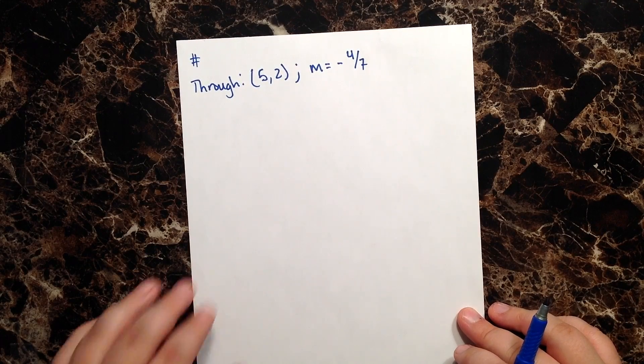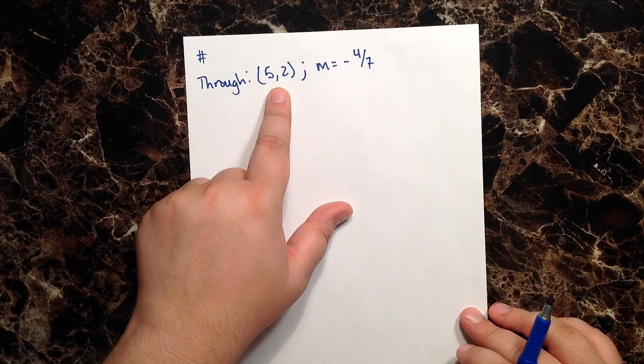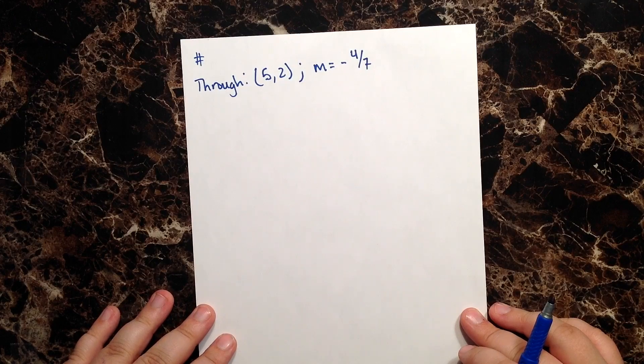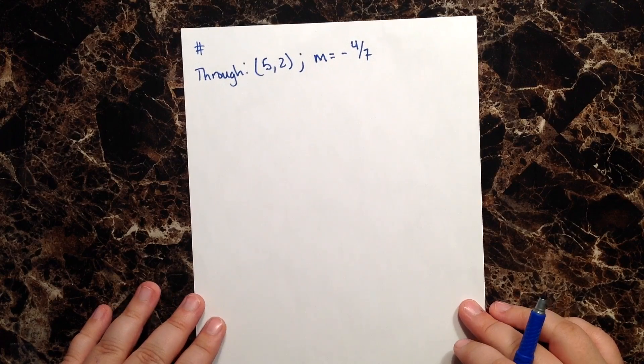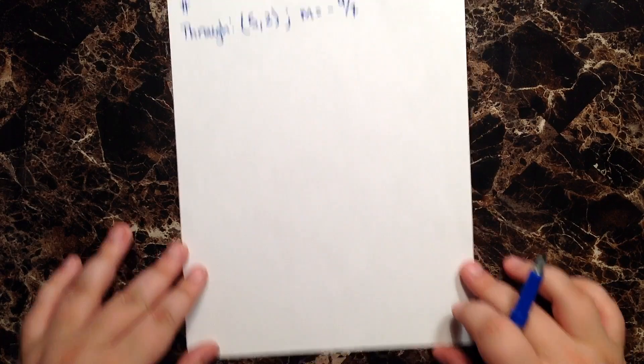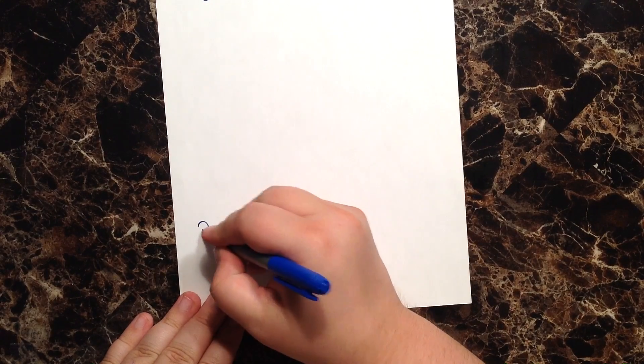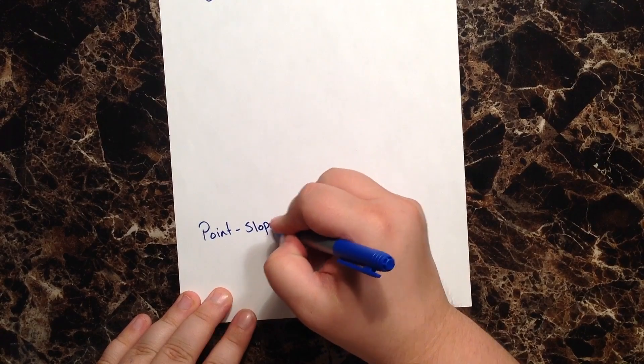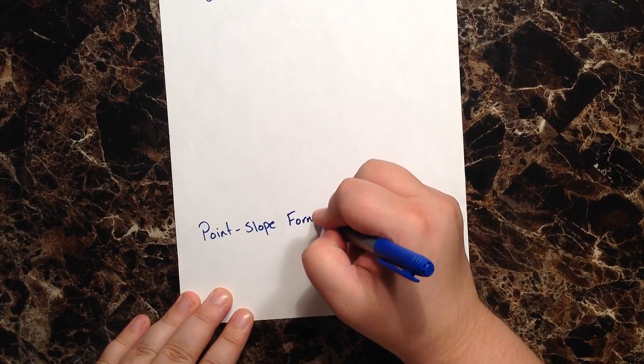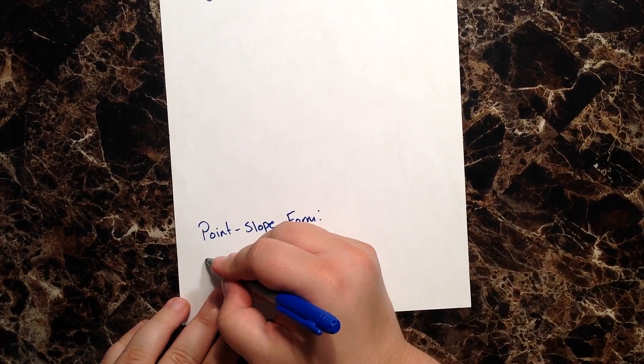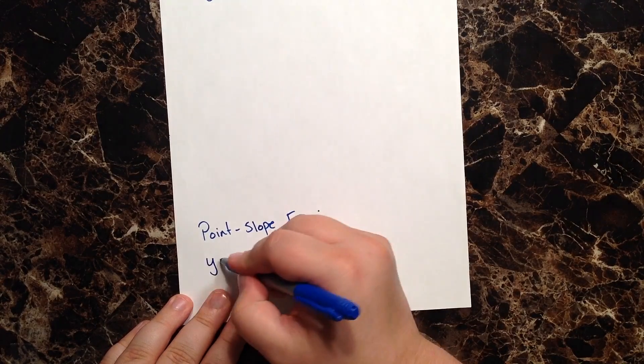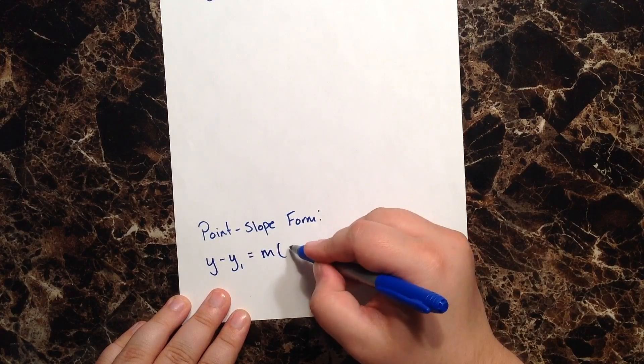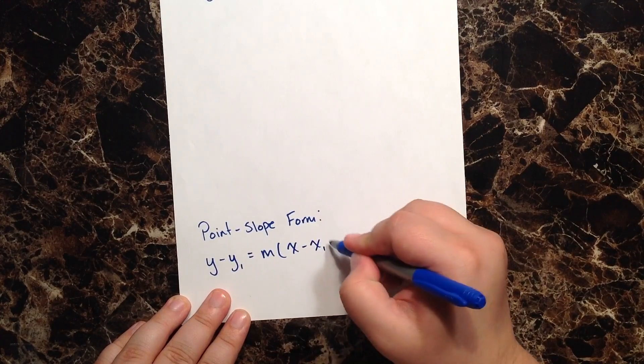Well, I see that they've given us a point and they've given us a slope. So let's go ahead and review a form that we haven't yet talked about in questions one through three, and this is going to be the point-slope form. You may recall that the point-slope form is y minus y₁ equals m times quantity (x minus x₁).